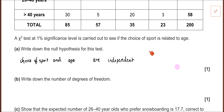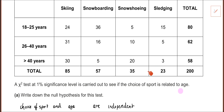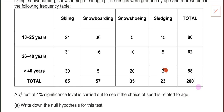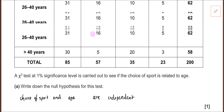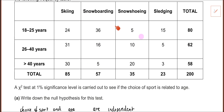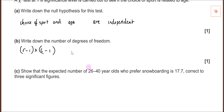Degrees of freedom tend to be fine. You can just put the data into your calculator first and it gives it to you. If you didn't want to do that, degrees of freedom equals rows minus one, multiplied by columns minus one. Looking at the table: four minus one is three, three minus one is two, three times two is six. So degrees of freedom equals six.